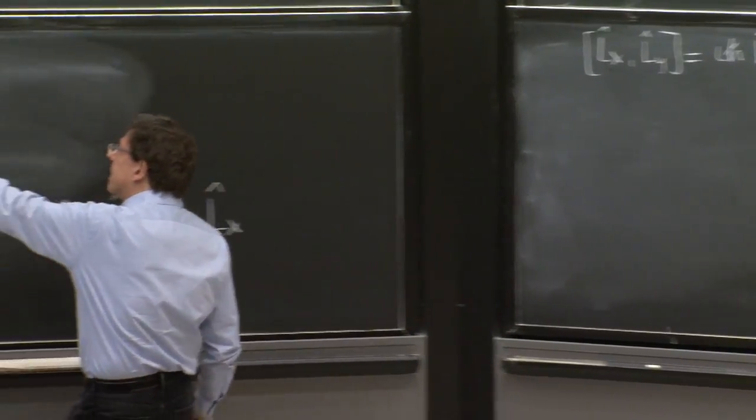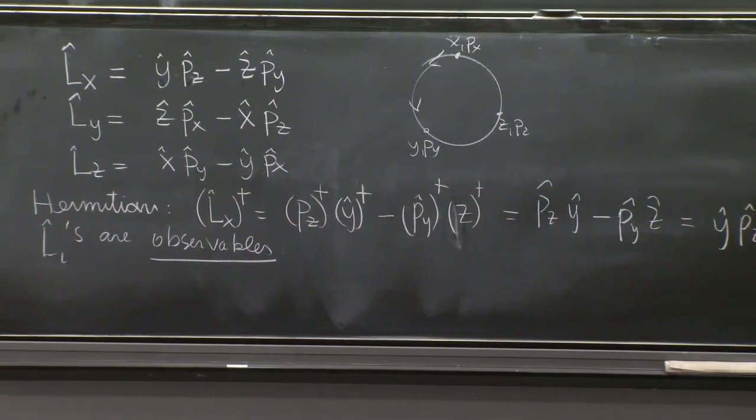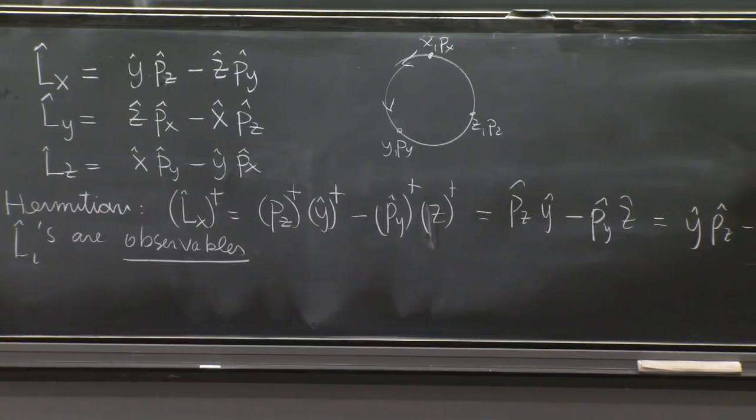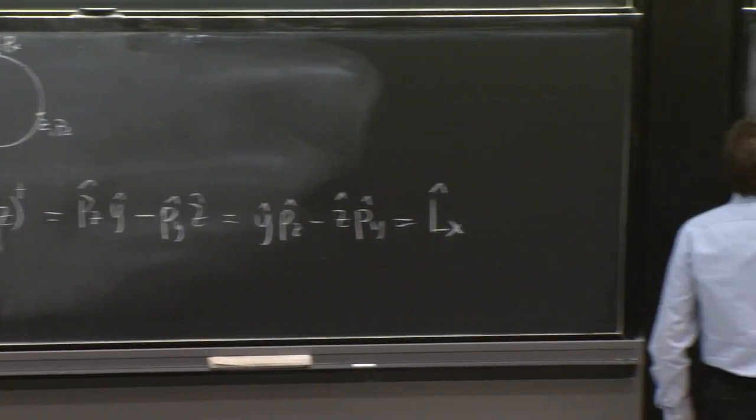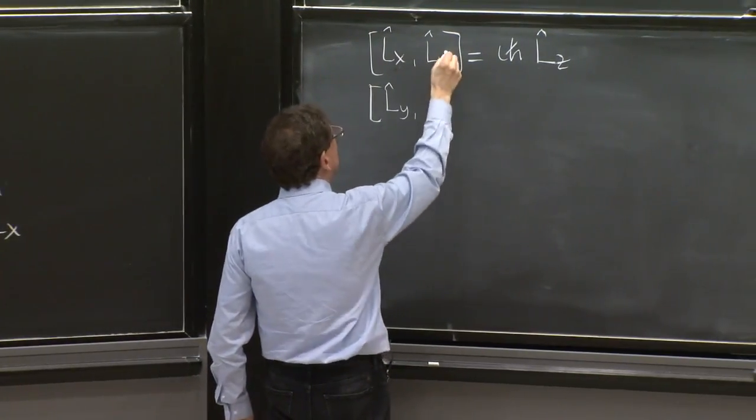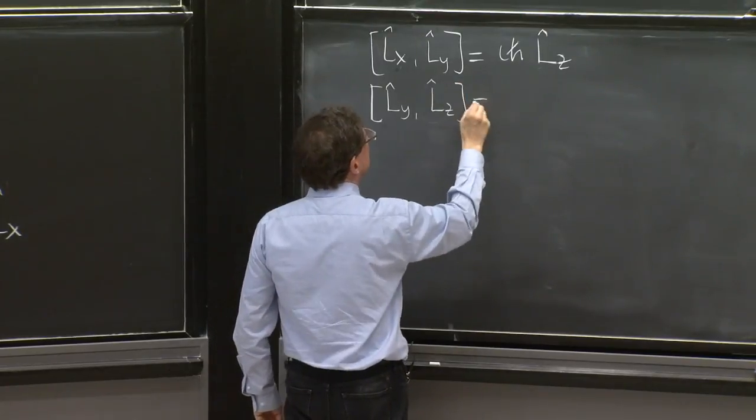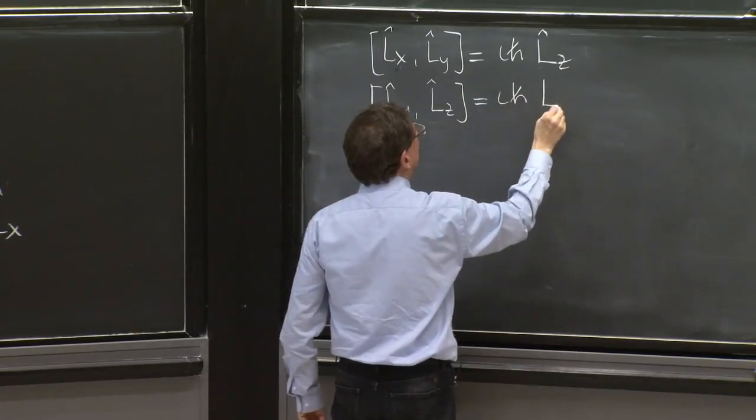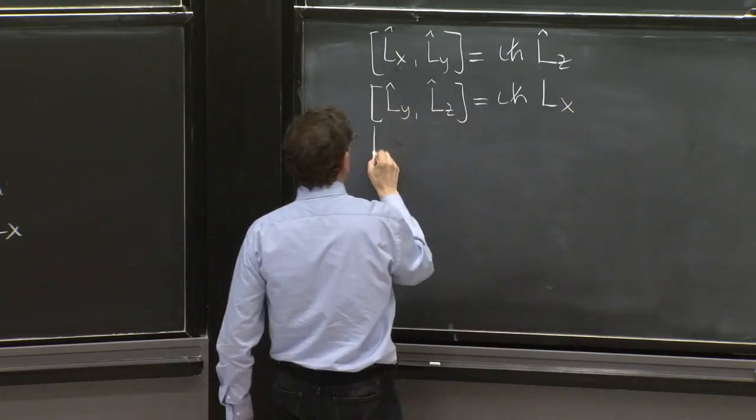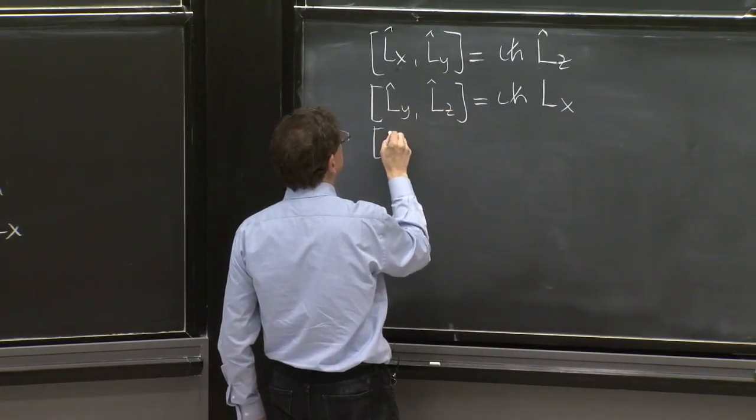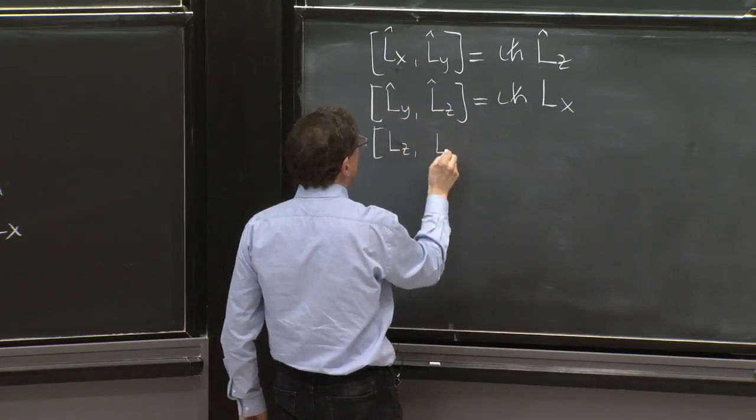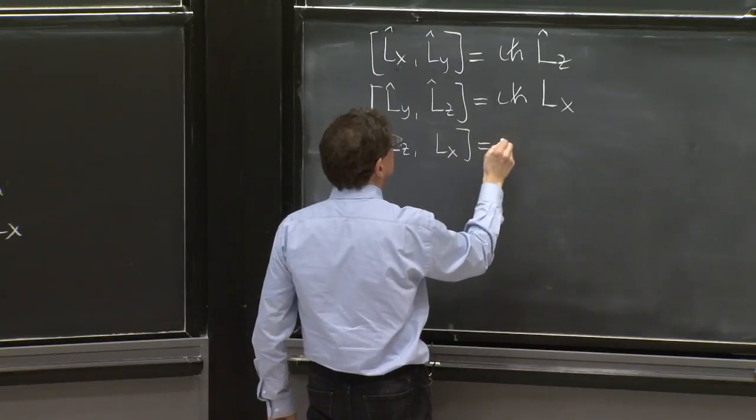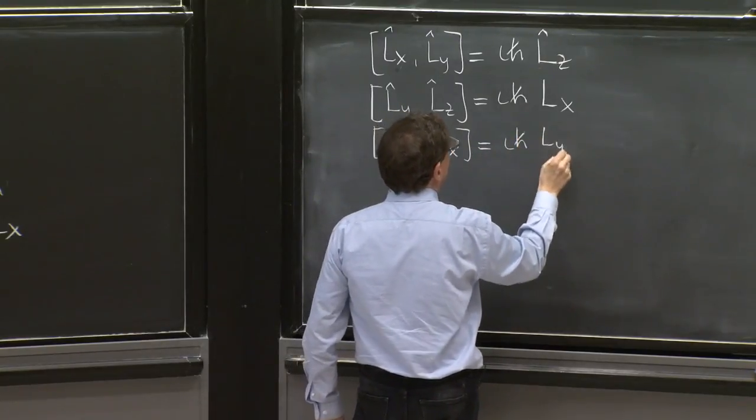And this equation, as we said, everything is cyclic. So you don't have to work again to argue that then Ly Lz going cyclic must be equal to i h bar Lx and that Lz Lx must be i h bar Ly.